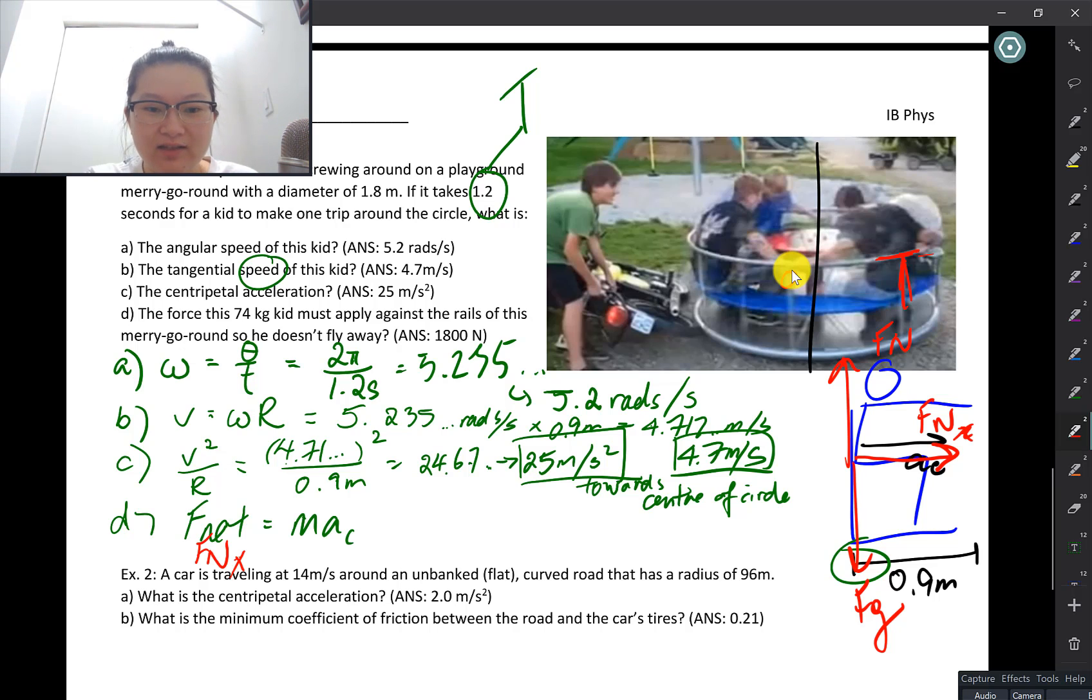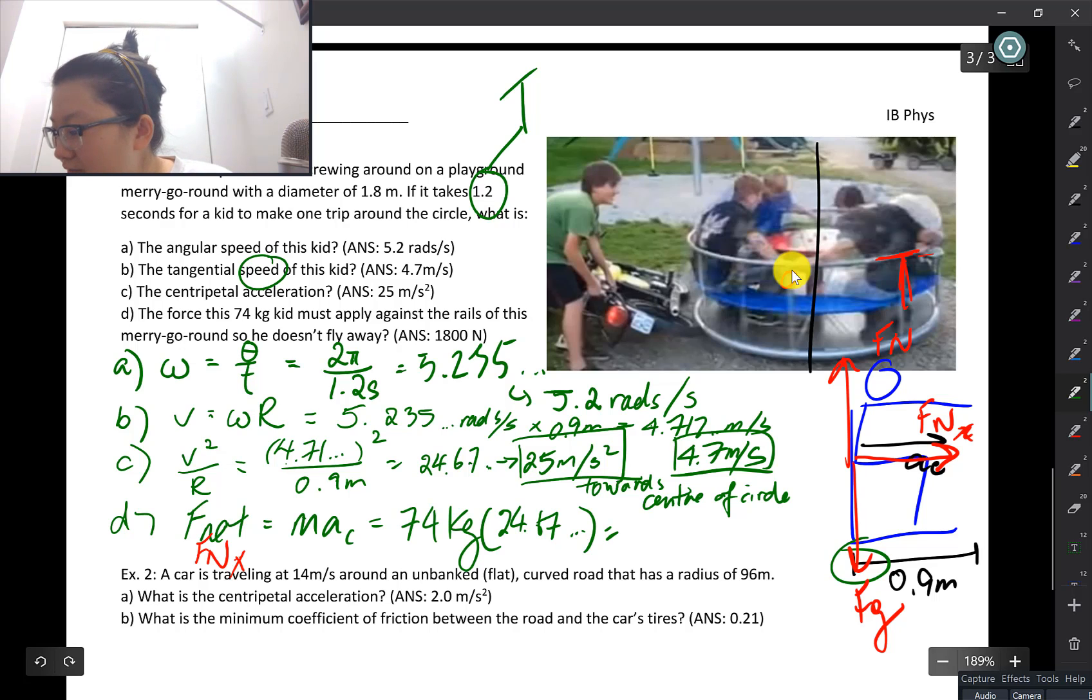All we have to do here is take the centripetal acceleration, multiply by its mass. That's the amount of net force that needs to be applied on him to keep him moving around the merry-go-round, and that's going to be the Fn, or the force of the railings and everything applied on the kid. His mass is 74 kilograms, his centripetal acceleration was 24 something, which I'm going to use the non-rounded value, and that's going to give us 1825. That's going to round to two sig figs, 1800 newtons. There you go.